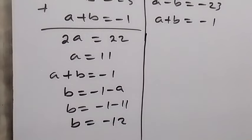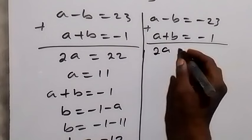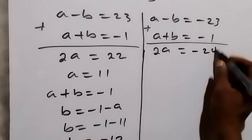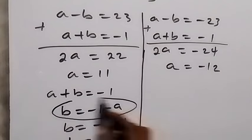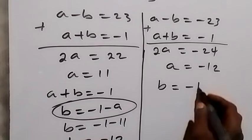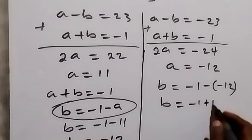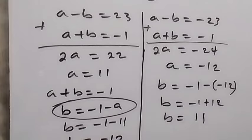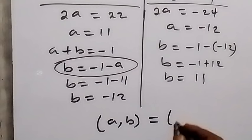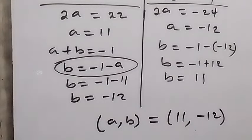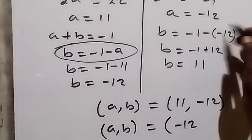For the second case: adding a minus b equals minus 23 and a plus b equals minus 1, we get 2a equals minus 24, so a equals minus 12. Solving for b from a plus b equals minus 1: b equals minus 1 minus (minus 12), which is minus 1 plus 12, so b equals 11. Therefore our two solution sets are (a, b) = (11, -12) and (a, b) = (-12, 11).